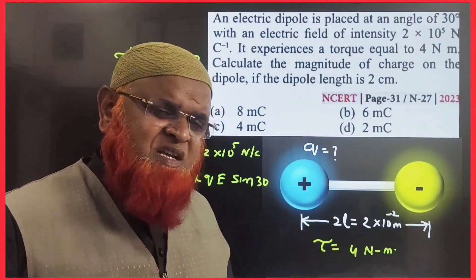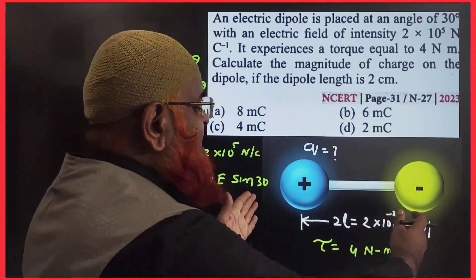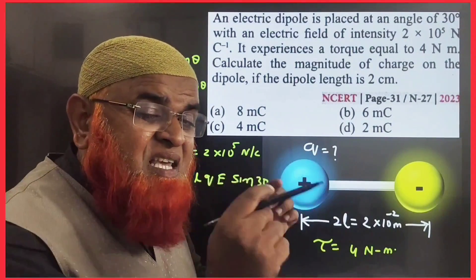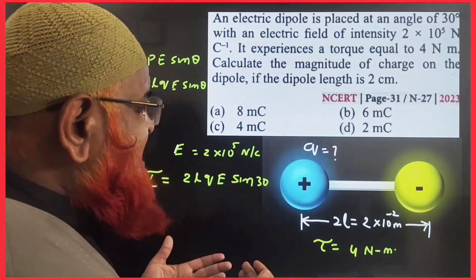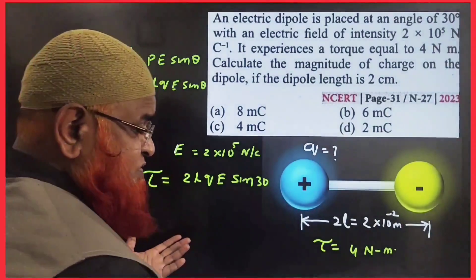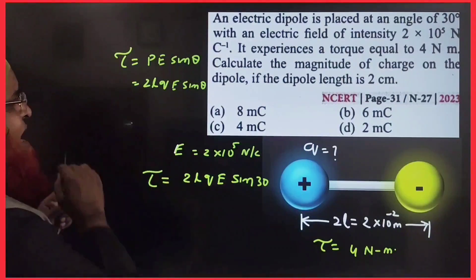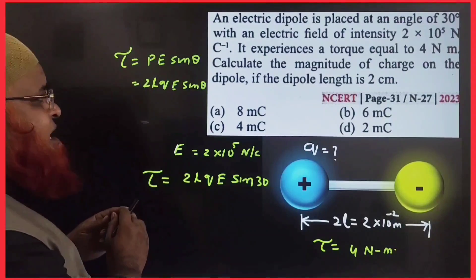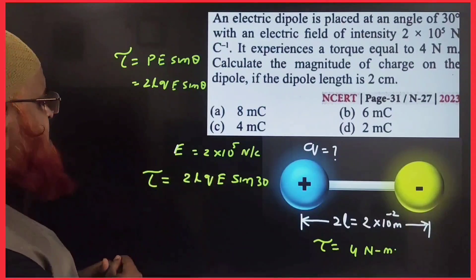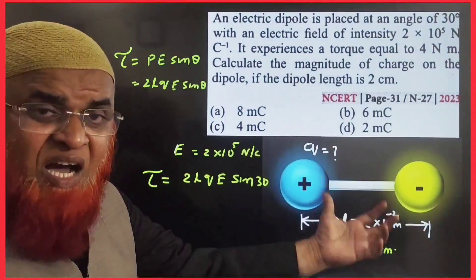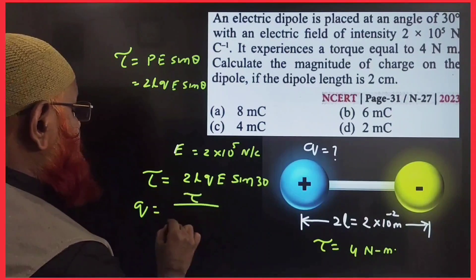The next model question: a positive charge and negative charge are given. The distance between the two charges 2L is 2 × 10⁻² meters (i.e., 2 centimeters). The torque is also given as 4 newton meter. The angle between the electric field and the dipole is 30 degrees. Using τ = p E sine theta = 2L × Q × E × sine 30°, we need to find the charge Q. Therefore Q equals torque divided by 2L into E into sine 30°.